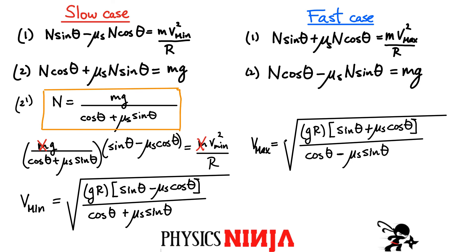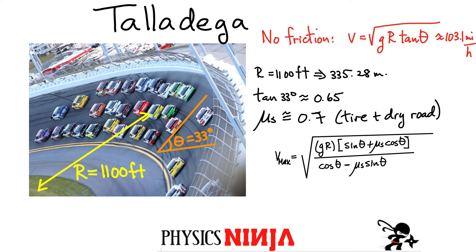So we have expressions for minimum and maximum speeds to safely navigate this turn. Let's go back to Talladega Racetrack and calculate the maximum speed. From the previous case without friction, the radius of one of the curves is around 1100 feet, which is a little bigger than 335 meters, and the angle the track makes with the horizontal is about 33 degrees. Without friction I got 103.1 miles per hour, but we know cars go much faster than that. Now I'll include a coefficient of static friction — I looked up the value for dry roads, noting that wet roads give a smaller value and race tires might give an even larger one.